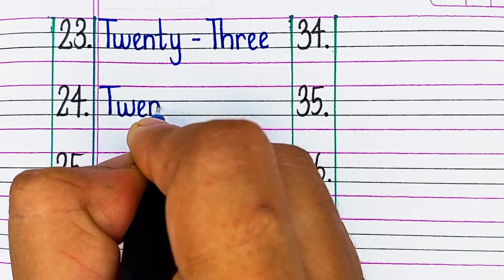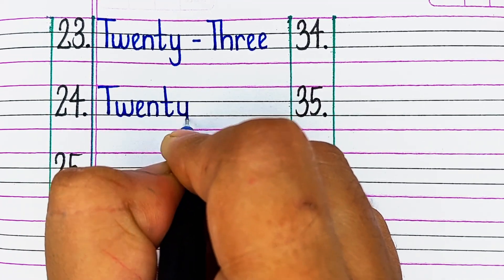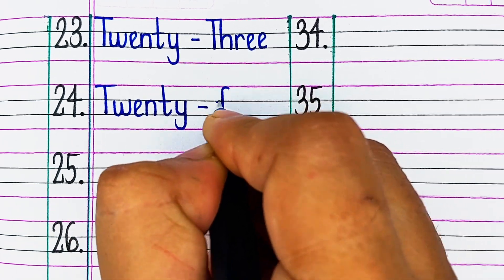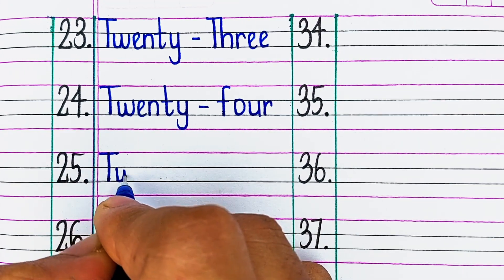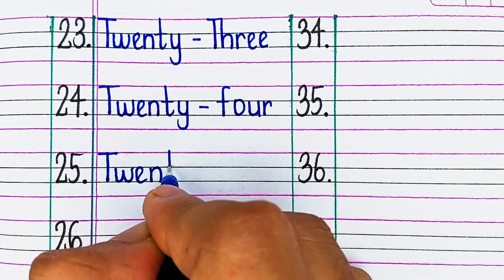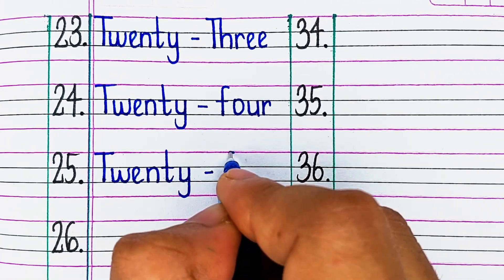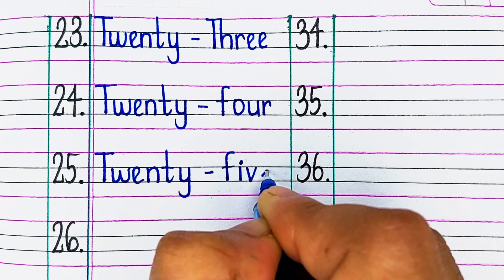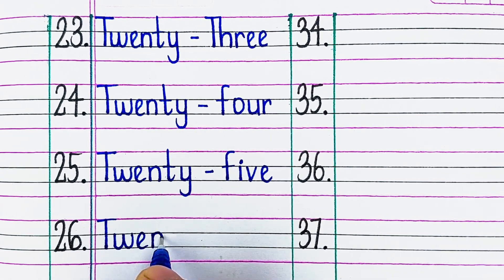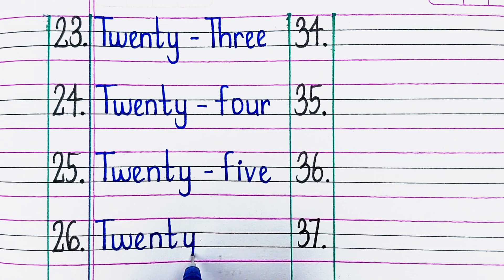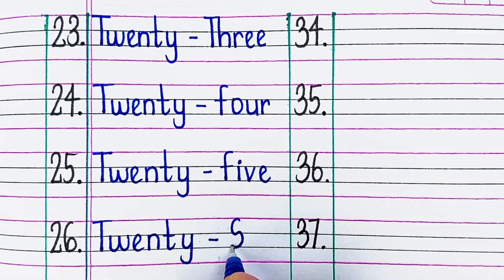Next, T-W-E-N-T-Y-T-W-O, 22. Next, T-W-E-N-T-Y-T-H-R-E-E, 23. Next, T-W-E-N-T-Y-F-O-U-R, 24. Next, T-W-E-N-T-Y-F-I-V-E, 25. Next, T-W-E-N-T-Y-S-I-X, 26.